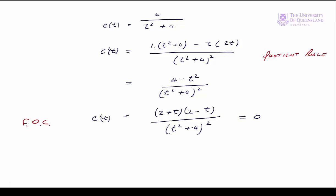On the face of it this looks like a difficult function to solve. However, if we look at it more carefully we can find a solution. Remember our domain is t greater than or equal to 0, so our denominator is always positive — greater than 0. The term 2 plus t will also always be positive. So the first derivative will equal 0 when t is equal to 2. We have our first order condition and we know we have a stationary point at t equals 2.